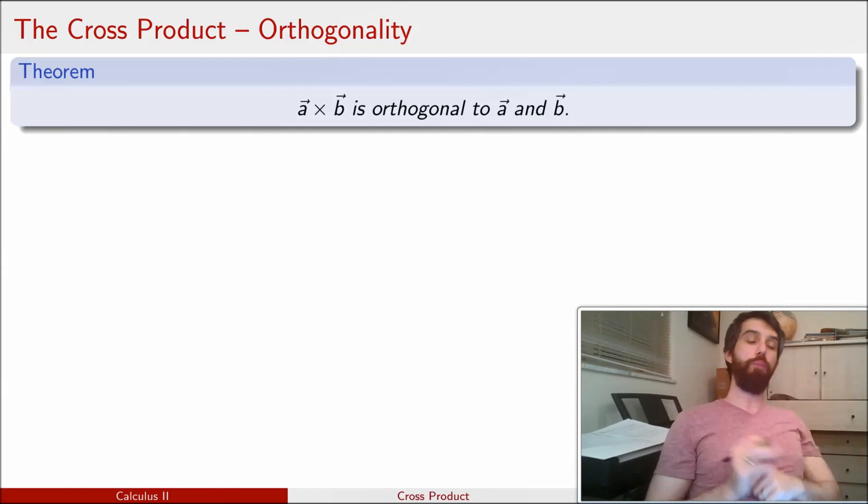Now, one property of the cross product is that the cross product is a vector that is orthogonal to both of the two original vectors. Indeed, this is one of the main reasons why I care about the cross product. Because I often will care about vectors that are orthogonal to something that I already have. And the cross product gives me a way to find an orthogonal vector.